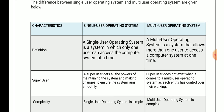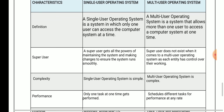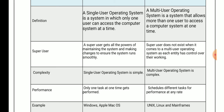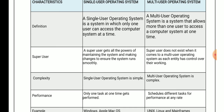In a single user operating system, the working is simple, and it is simpler compared to a multi-user operating system because a multi-user system has multiple users, making its working more complex. In terms of performance, a single user operating system can perform one task at a time, but in a multi-user operating system, different tasks are performed simultaneously.